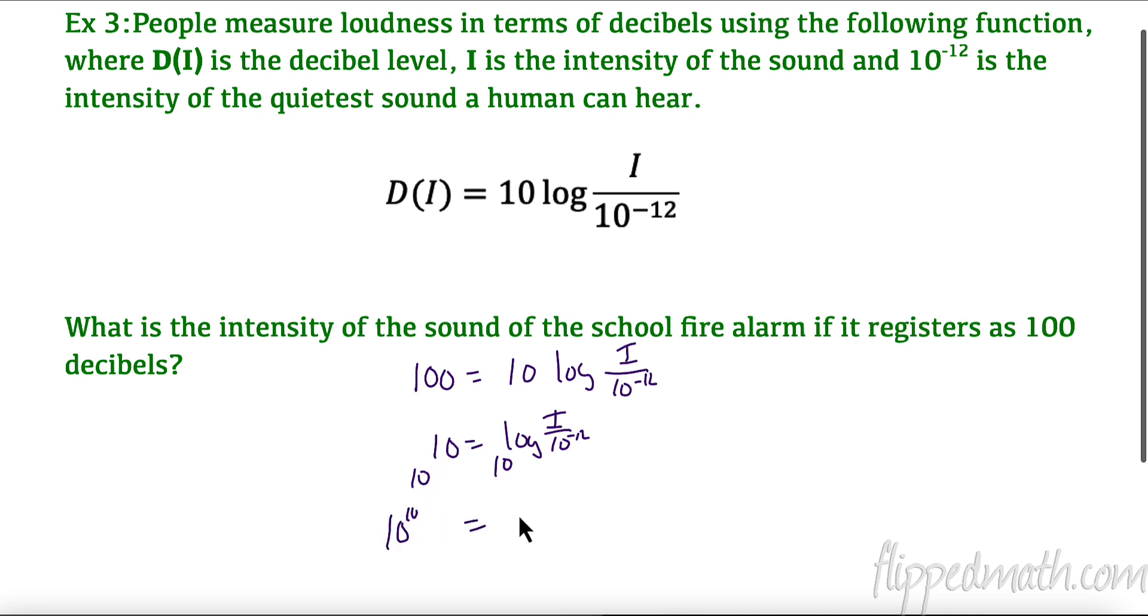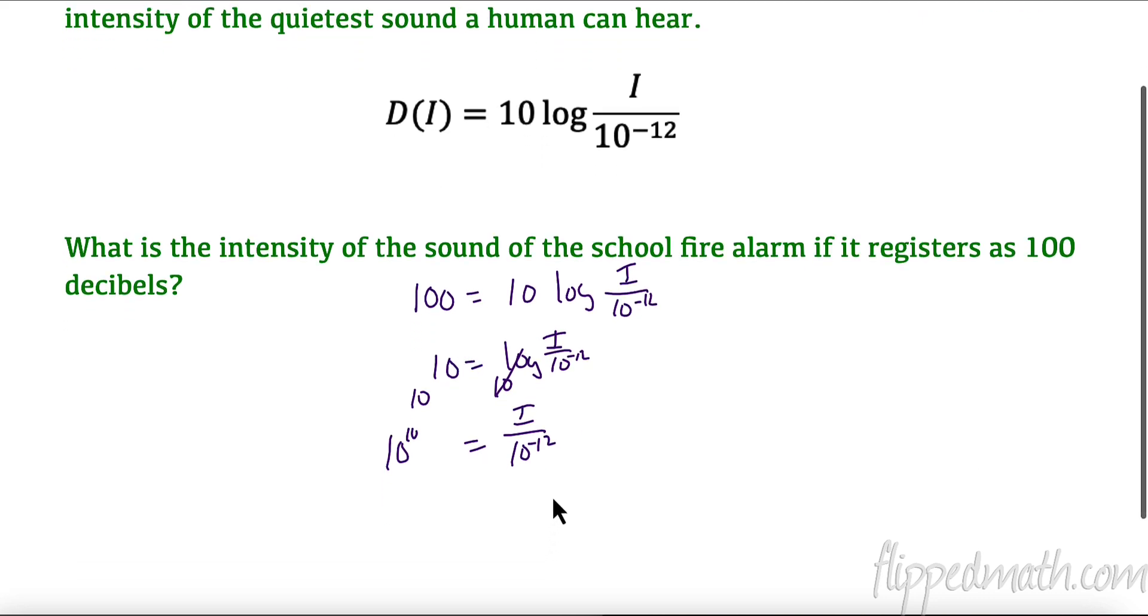This is a common log so I can raise both sides to base 10. 10 to the 10th equals i divided by 10 to the -12. The opposite of dividing by 10 to the -12 is multiplying, so now I have 10 to the -12 times 10 to the 10th = i. If you remember your exponent rules, when I had the same base I add the exponents, so that's 10 to the -2 which is the intensity or 0.01 would be the intensity of that fire alarm. 10 to the -2 versus 10 to the -12, quite a bit more intense. It's quite louder.